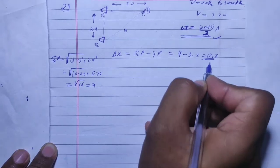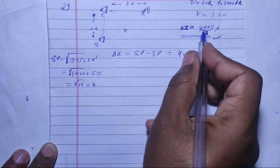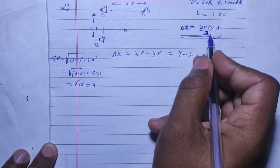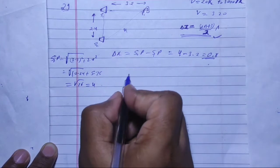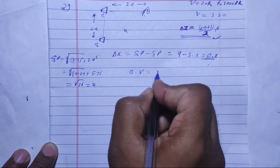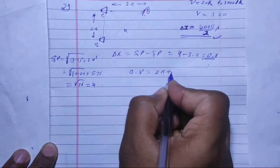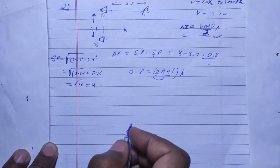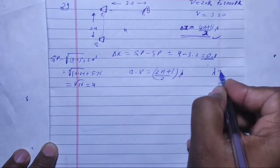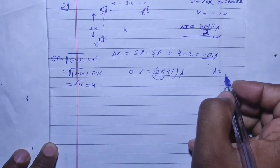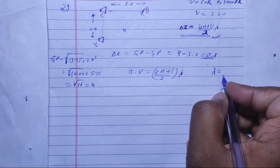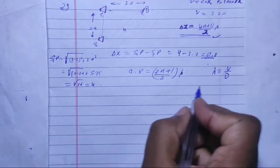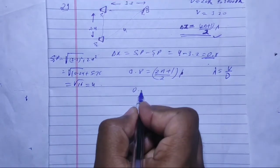The path difference equals (2n+1)/2 × λ for destructive interference. So 0.8 = (2n+1)/2 × λ. Wavelength can be written as speed divided by frequency, so λ = speed / frequency.